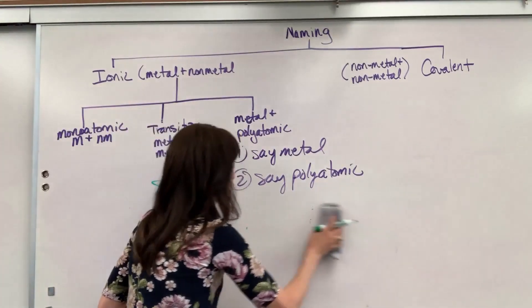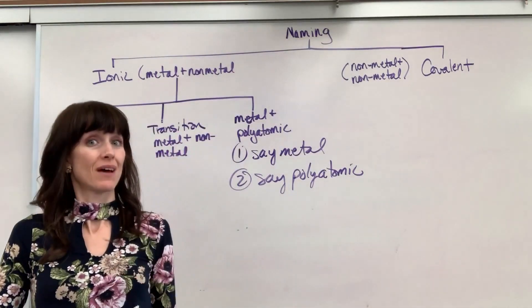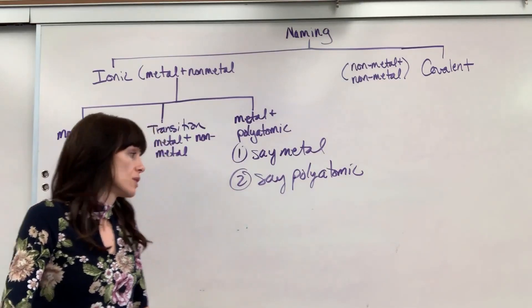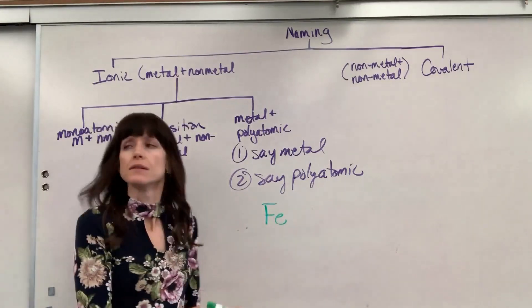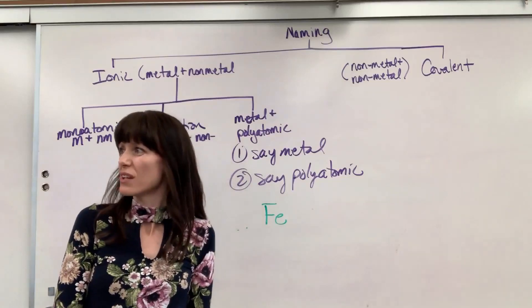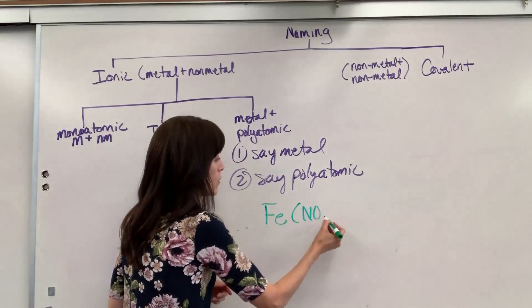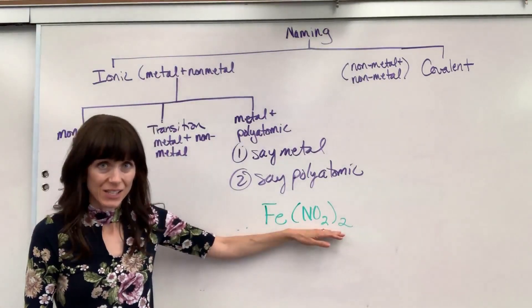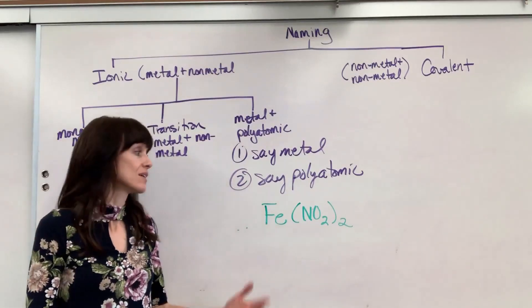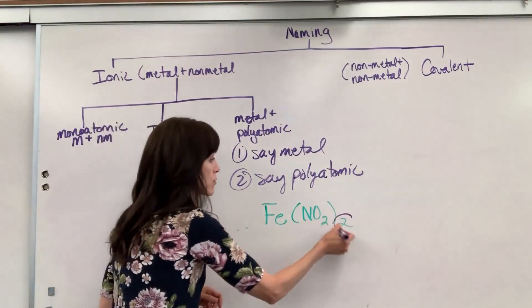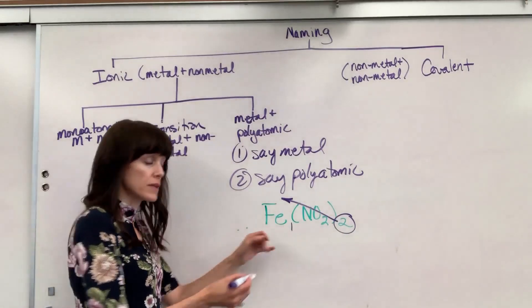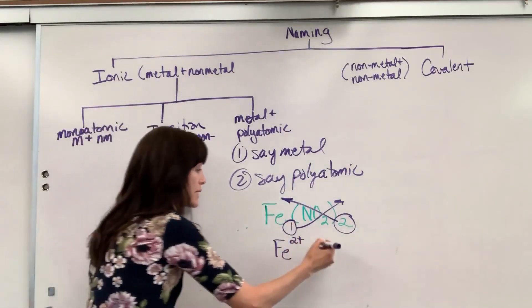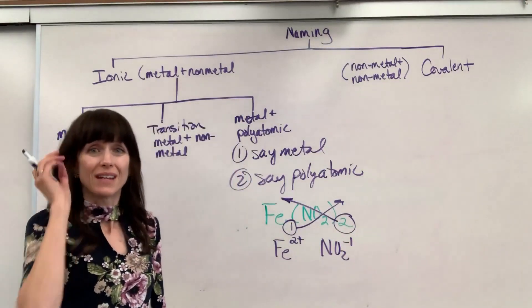Now there is one addition to this, one little disclaimer. If you have a metal that's a transition metal with a polyatomic, you still say the metal, say the polyatomic, but you do have to include the Roman numeral. Let's say we have Fe(NO2)2. This is called iron and this is called nitrite. Iron is a transition metal and I have to tell the reader what its original charge was. We're going to cross those charges back up. I have an understood 1 on this iron. Cross that back up. That means iron was originally a 2, a +2 charge. The nitrite is NO2-, minus 1. And that is true - nitrite is -1.